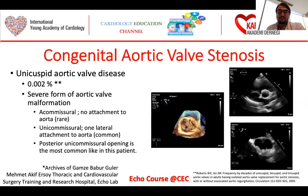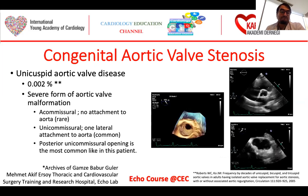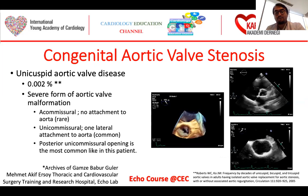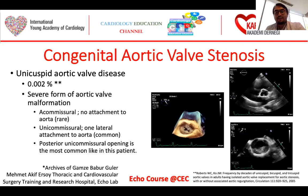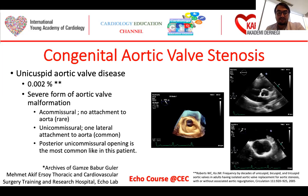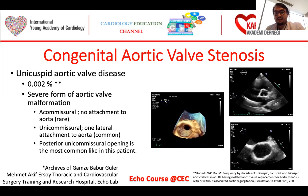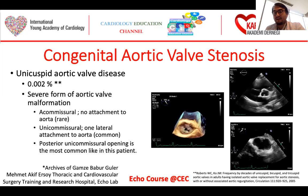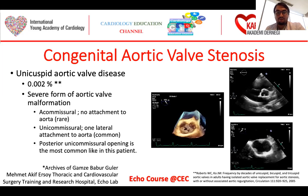Another congenital aortic valve stenosis cause is the unicuspid aortic valve. This is more rarely seen, at about 0.2 patients per 100,000, and a severe form of aortic valve malformation is seen in these patients. There may be two types: acommissural and unicommissural. If there is no attachment to the aorta, this is acommissural. If there is one lateral attachment to the aorta, this is unicommissural and more commonly seen. Posterior unicommissural opening is the most common type. In this patient shown on the right, there is a posterior commissure in the unicuspid aortic valve. This patient had aortic stenosis and LVOT obstruction and required surgery; these are the echocardiographic evaluations before the operation.